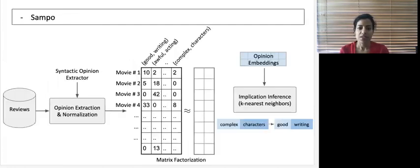This is how SAMPO works. Given a corpus of reviews, it first uses a rule-based opinion extractor to find opinion tuples, which are then normalized to reduce any surface form variations.